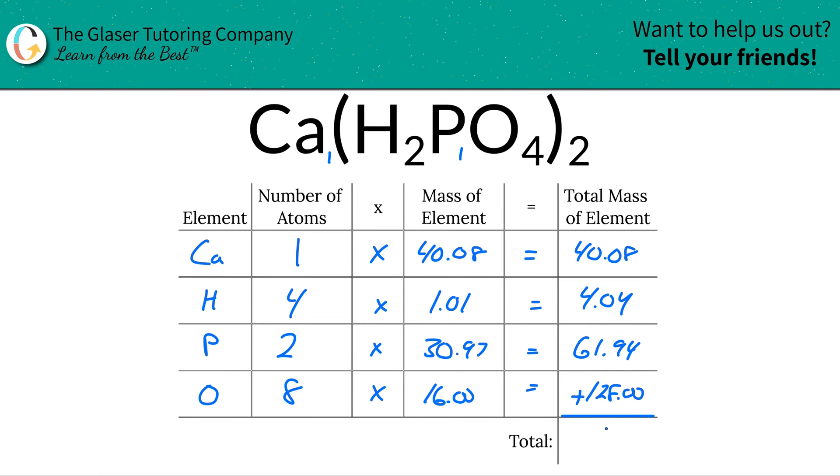And then to find the total mass now of the entire compound down here, all you have to do is add this column together. That's it. So when you do that, it comes out to be about 234.06.